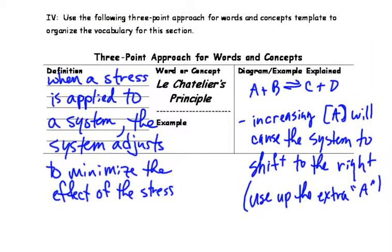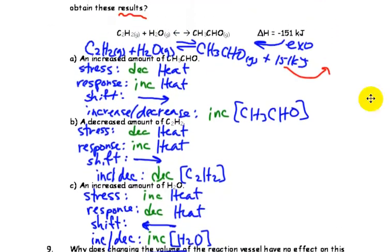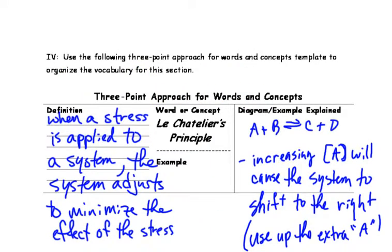So here we have the final question, the final vocab: Le Chatelier's principle. When a stress is applied to a system, the system adjusts to minimize the effect. So whatever stress you have, the automatic response is to do the opposite, to undo what has been done, and it shifts in the direction in order to do that.